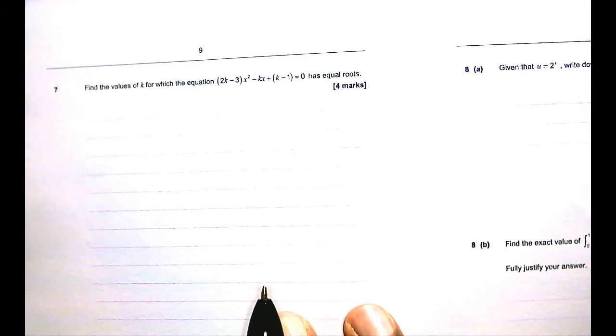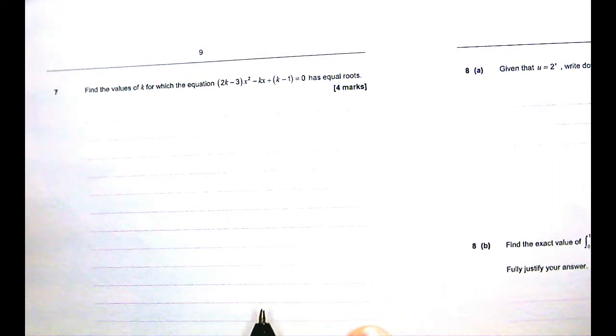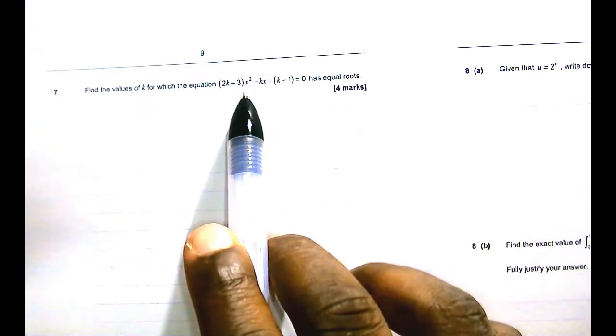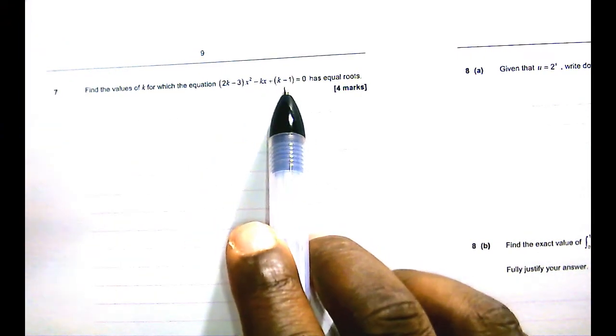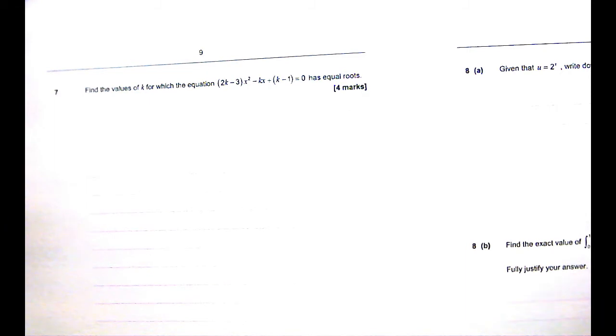Now let me remind you that we are dealing with a quadratic because you have x squared, you have x and you have a constant term. Now in a quadratic you could have three types of roots: real roots, complex roots or equal roots. And that all depends on the guy we call the discriminant.